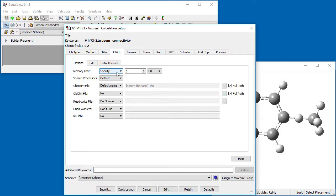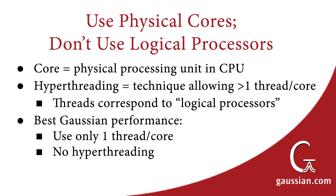The GaussView Link0 panel allows you to specify %NprocShared using the Shared Processors dropdown. Here, we allocate 8 cores for our calculation. For best performance and maximum efficiency, it is important to limit Gaussian's CPU use to 1 thread per physical core.